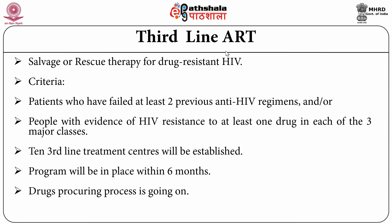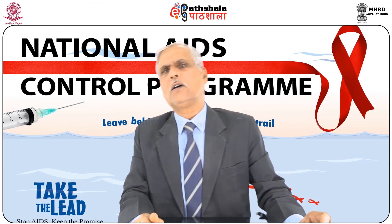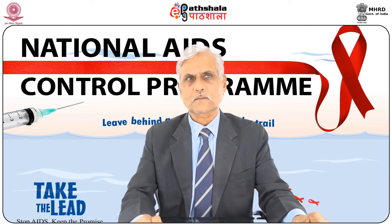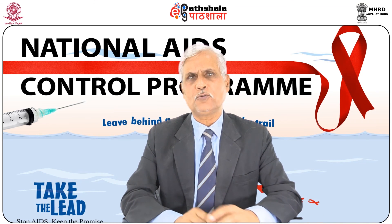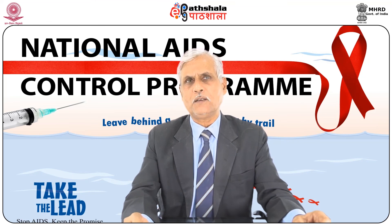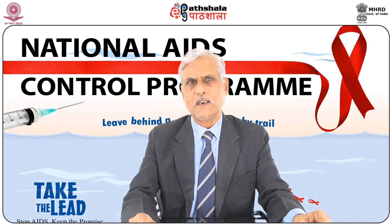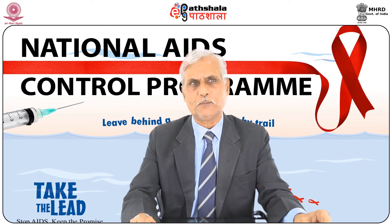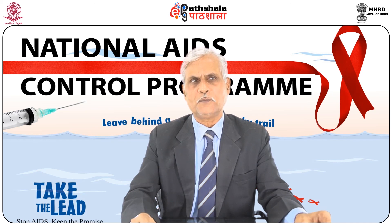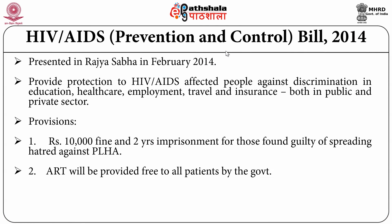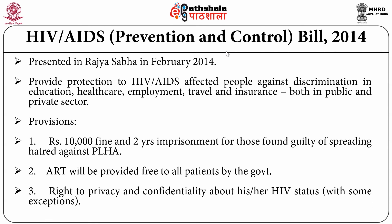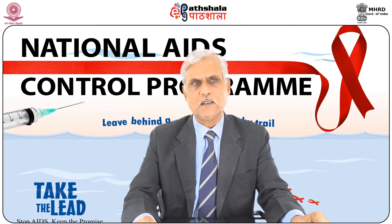The HIV AIDS Prevention and Control Bill 2014 was presented in the Rajya Sabha in February 2014, to provide protection to HIV-positive people against discrimination in education, healthcare, employment, travel, and insurance in both public and private sectors. Provisions include a Rs 10,000 fine and two years' imprisonment for those found guilty of spreading hatred against people living with HIV. The right to ART will be provided free of cost to all patients by the government, and the right to privacy and confidentiality about HIV status will prevail, with some exceptions.